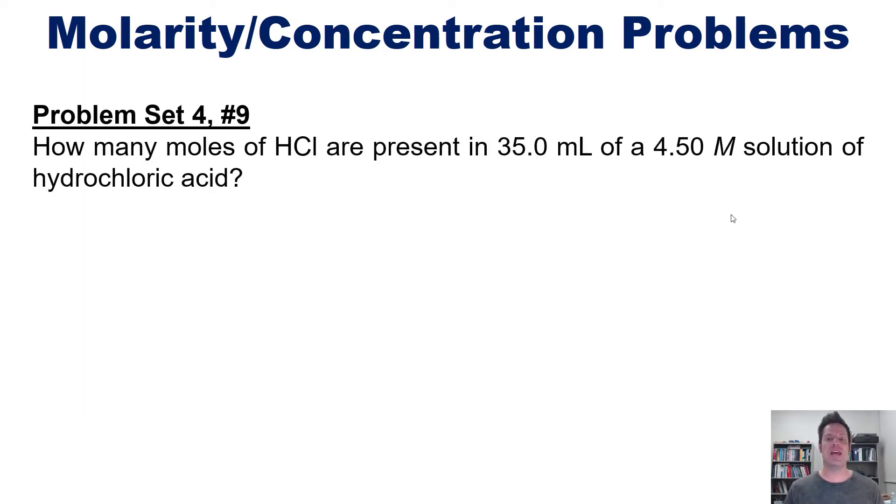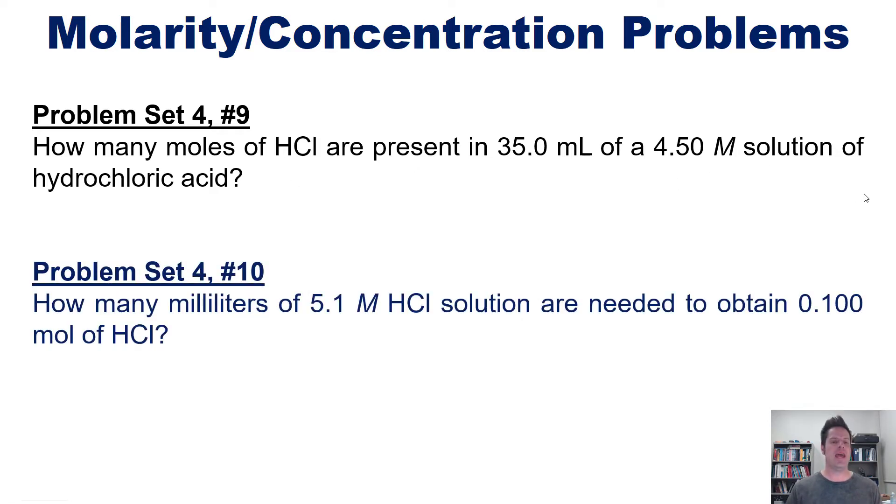How many moles of HCl are present in this many milliliters of a solution of hydrochloric acid with this concentration? And separately, how many milliliters of 5.1 molar HCl solution are needed to obtain 0.1 moles of HCl? I invite you to accept these on your own first, then hit play.